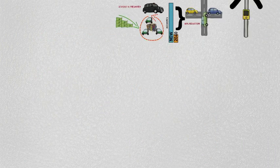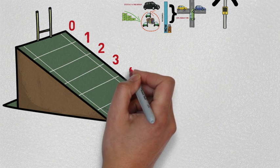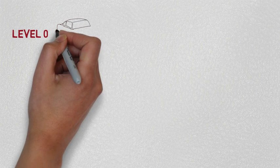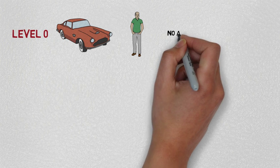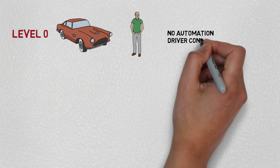To understand the future, we need to talk about the six levels of driverless cars. At level 0, it's a car that your father or your grandfather learned to drive on. There's no automation except perhaps gear changing. The driver controls everything.